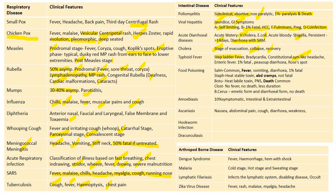Enteric fever when associated with Salmonella paratyphi is 1% fatal. Pea-soup diarrhea will be present, and rose spots are pathognomonic of typhoid fever. For food poisoning, Salmonella is the common type associated with fever — it is the only type associated with fever. Vomiting and diarrhea are common in poisoning cases; it is about 1% fatal.